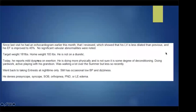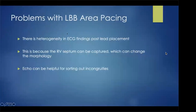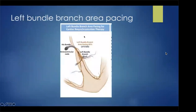Left bundle branch area pacing is not perfect — there is heterogeneity in ECG findings post-implant because the RV septum can be captured, changing the morphology. The left bundle is a large target: you might capture the anterior fascicle, posterior fascicle, or the left bundle itself. The ring electrode on the lead may also capture the RV septum, producing fusion between the two. So there are many different possible QRS morphologies, and echo can be very helpful in sorting out incongruities.